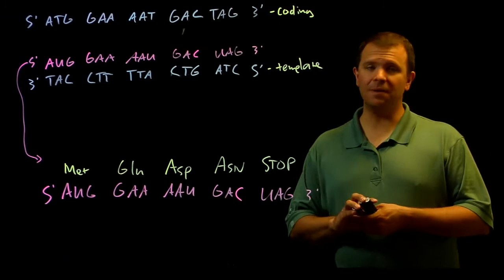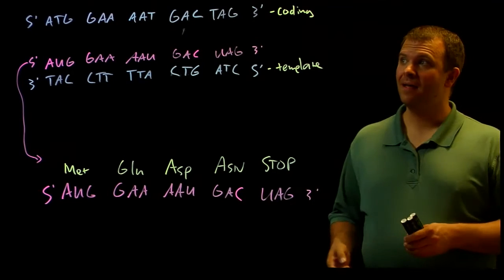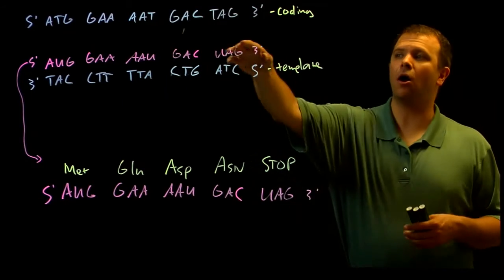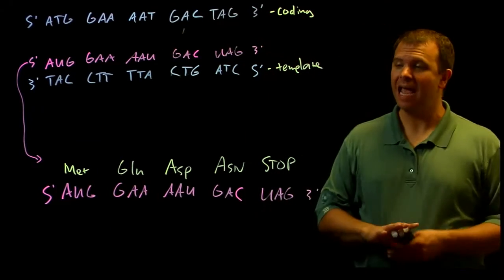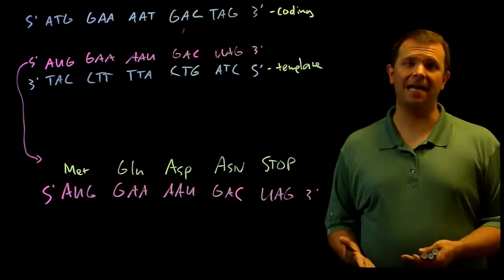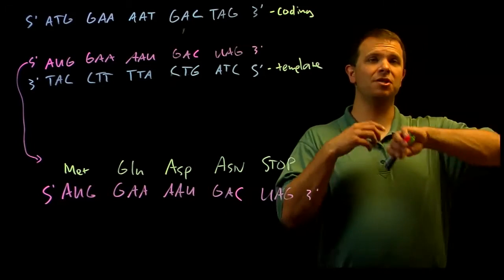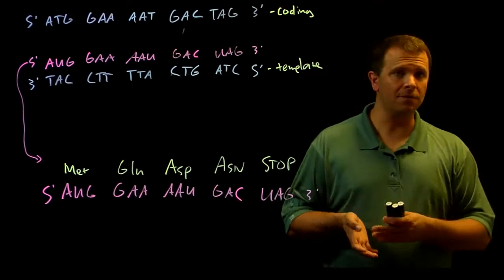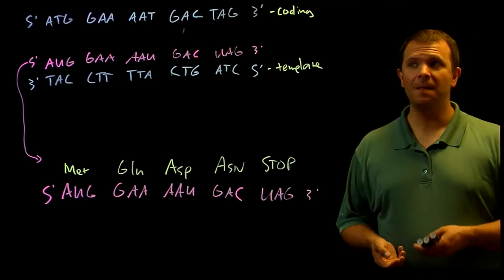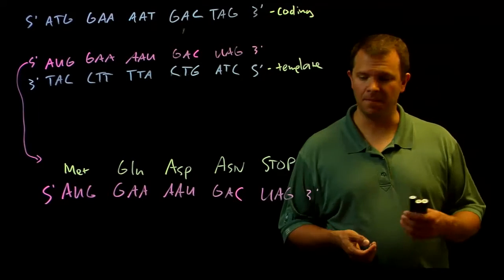And so it makes sense that if I change the sequence of the DNA, the sequence of the RNA is going to change and could possibly change the sequence of amino acids in the polypeptide, which could change the way that it folds, which could change its three-dimensional shape, which could change its eventual function in the cell.